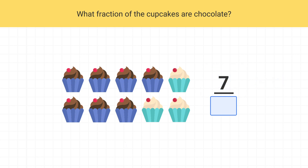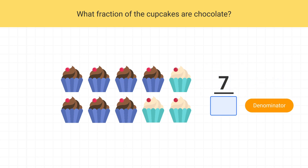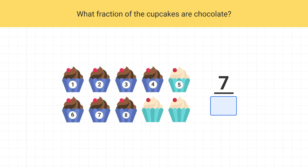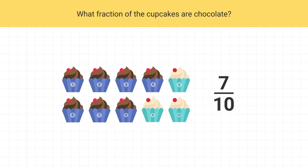Now to find the denominator, we need to count up the total number of objects. How many cupcakes are there in total? There's one, two, three, four, five, six, seven, eight, nine, ten cupcakes. So the denominator of the fraction is ten. That means seven-tenths of the cupcakes are chocolate.